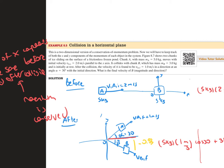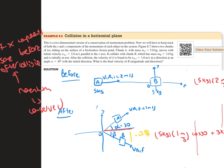It says two chunks of ice sliding on the surface of a frictionless frozen pond. Chunk A with a mass of 5 kilograms has an initial velocity of 2 meters per second parallel to the x-axis. Then it collides with chunk B that has a mass of 3 kilos and is initially at rest.